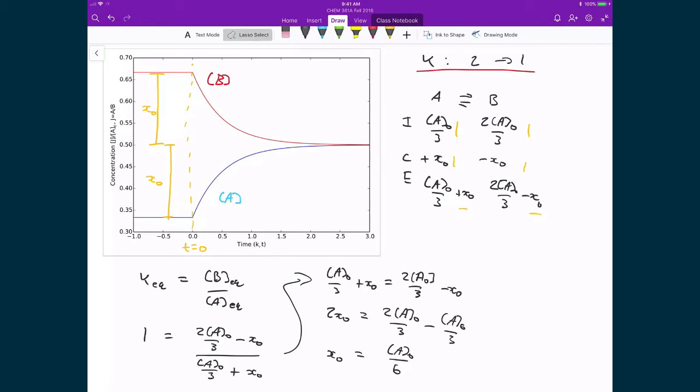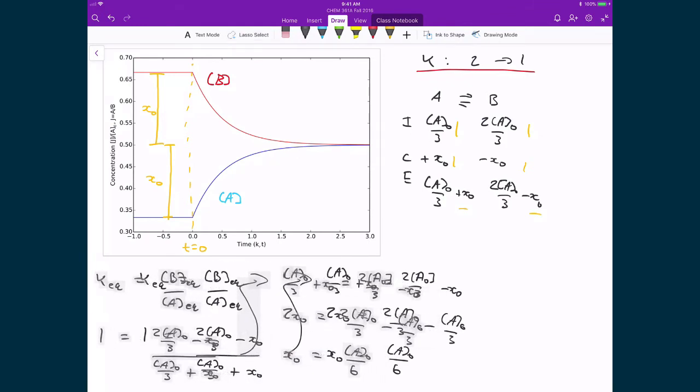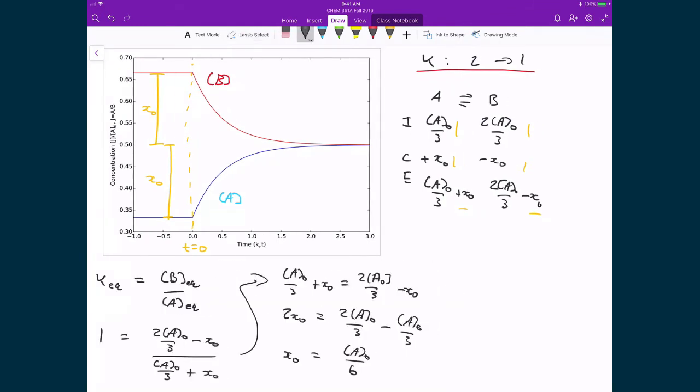And so this value, this A0 over 6, should start to make a little bit more sense with how I've drawn the figure here. Because if I continue and I just say, well, the actual equilibrium value here, well now I can write A0 over 3 plus A0 over 6, and what that gives me is equal to A0 over 2. And my 2A0 over 3 minus A0 over 6, well that's also equal to A0 over 2.